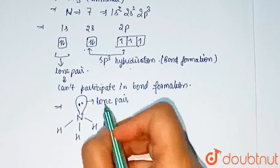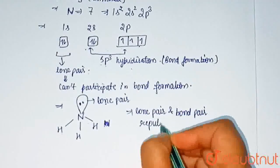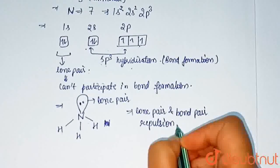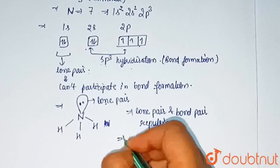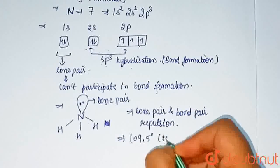Due to lone pair, bond pair repulsion, the expected bond angle would be 109.5 degrees in tetrahedron.